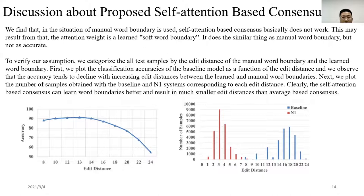We can observe that in the situation of using manual word boundaries, the accuracy obtained are almost the same for both average and self-attention based consensus when comparing N5 versus N6 and N7 versus N8. It is conjectured that the learned attention weights act like a soft word boundary. Although not exact, their function is in a similar way to manual word boundaries.